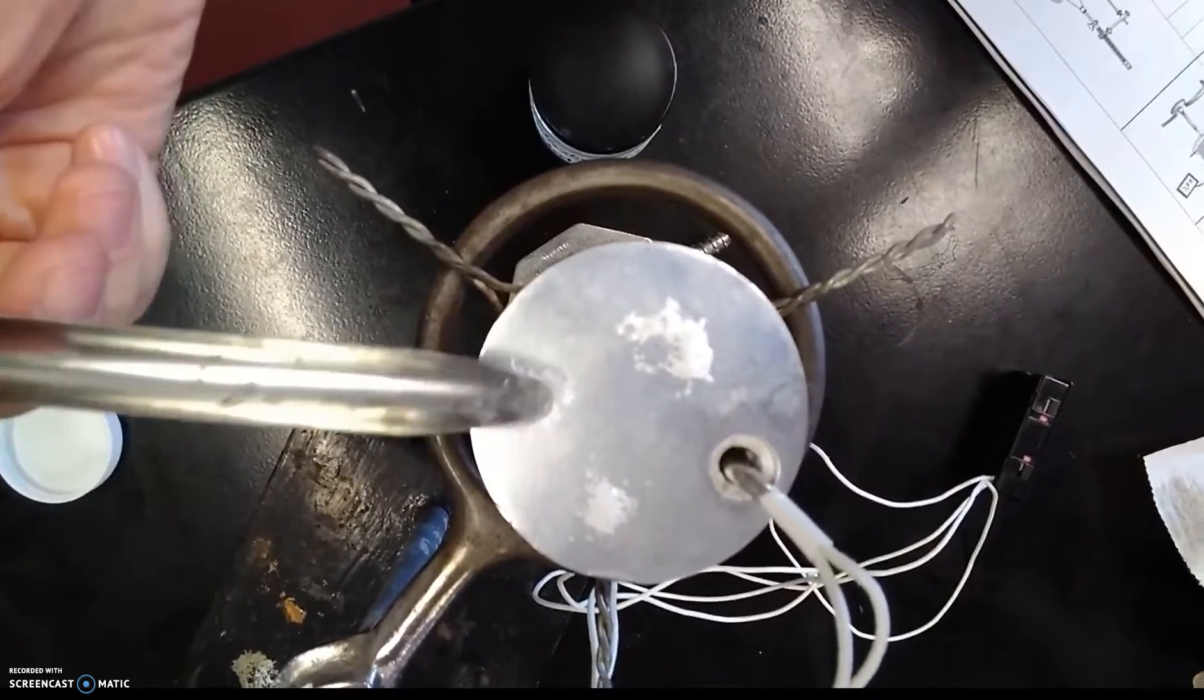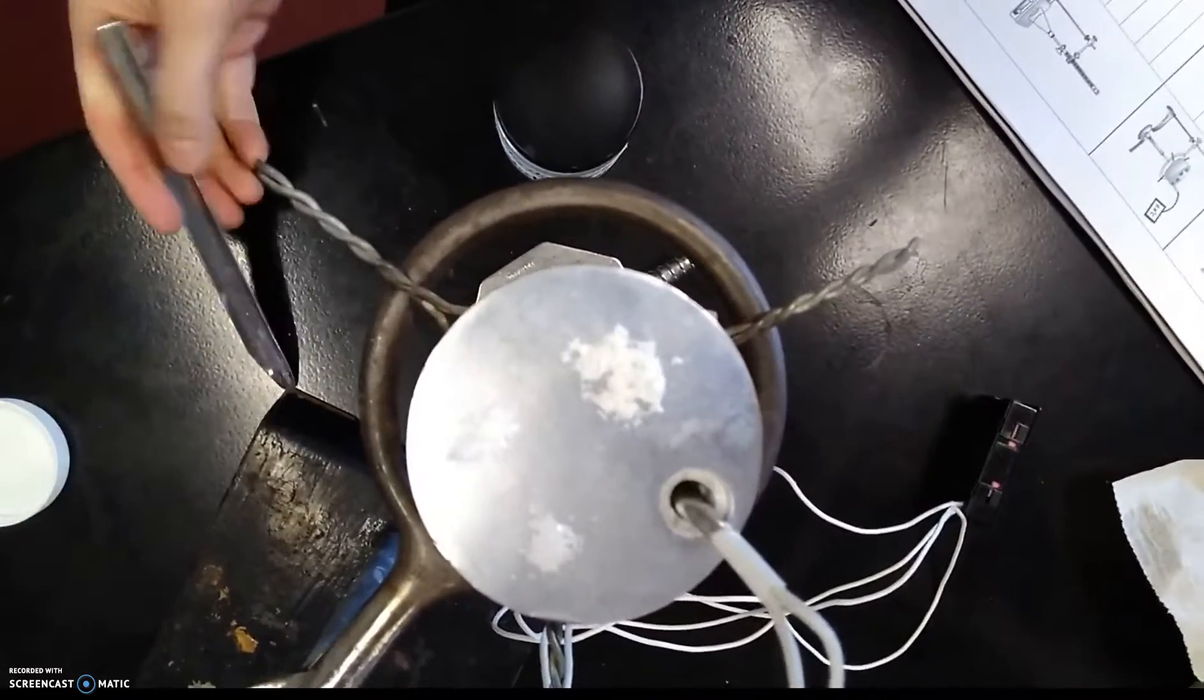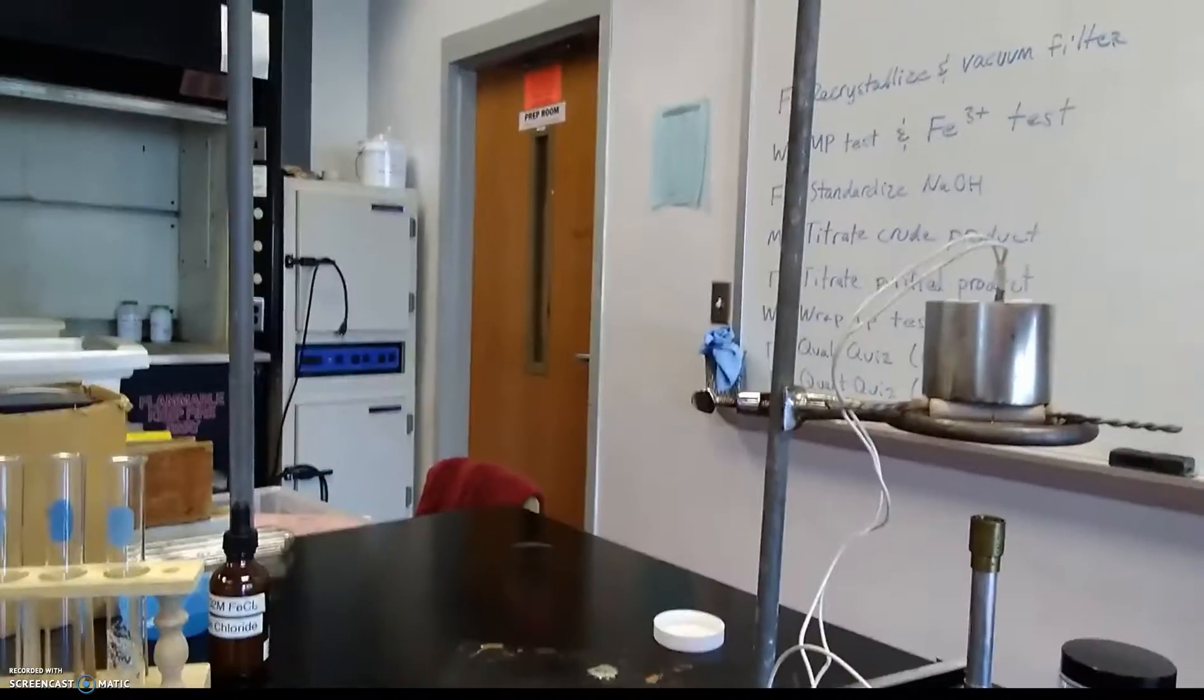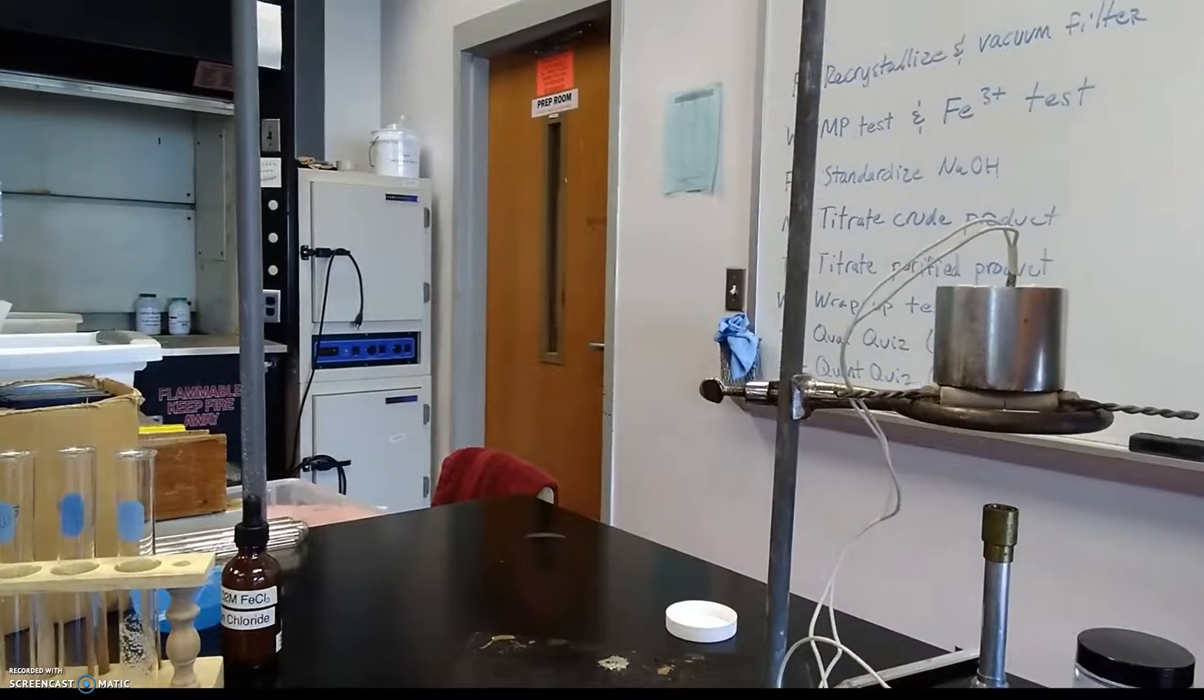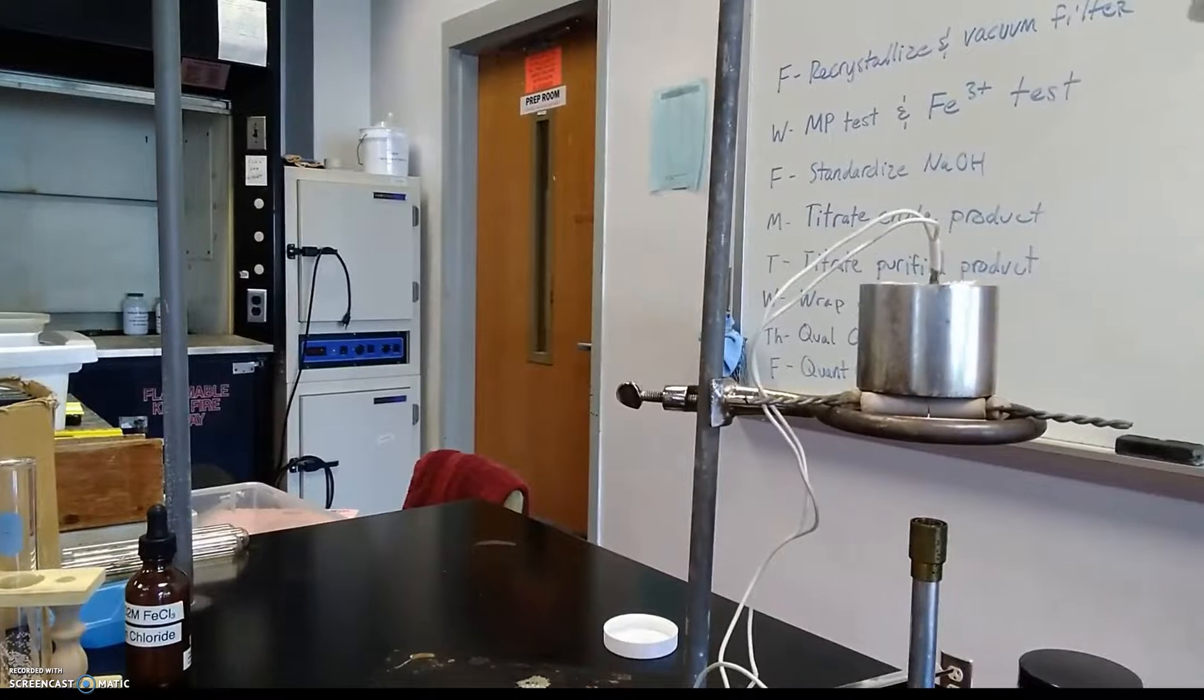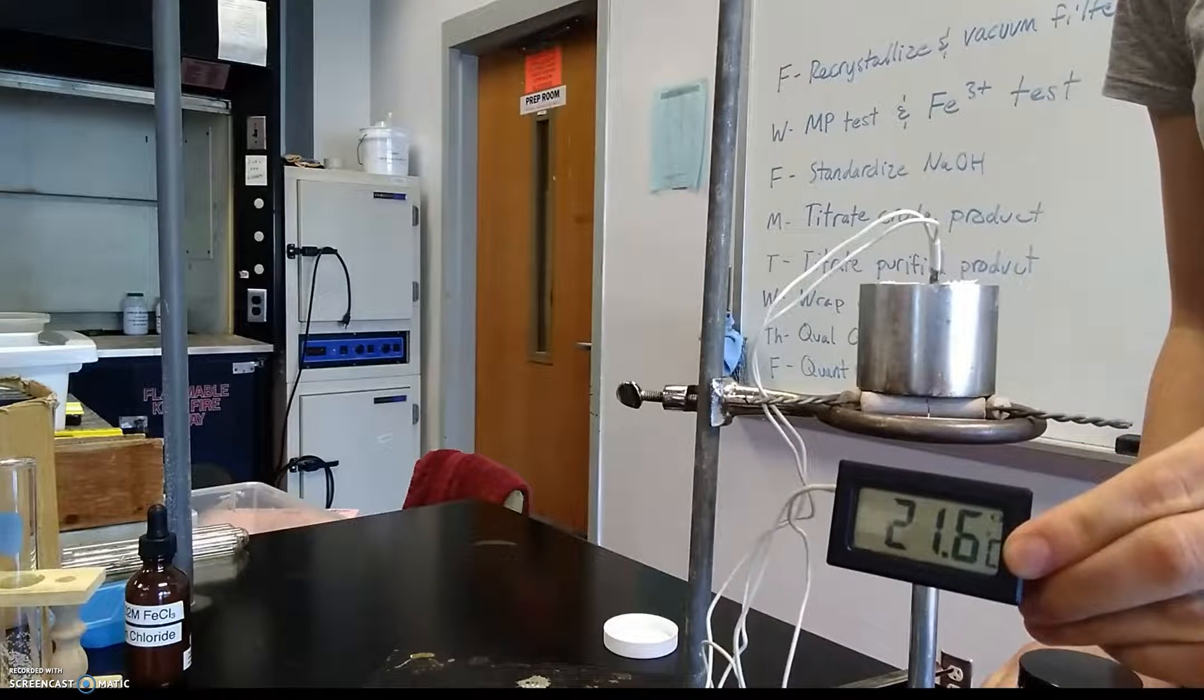You probably want to tamp down your solids. Otherwise you'll have like an air pocket and then the air underneath the sample will heat up but it won't melt your product. And then you get really weird looking melting points. And just like the last time we did melting point analysis you want to record the initial melting temperature and the final melting temperature.